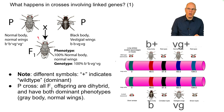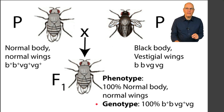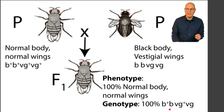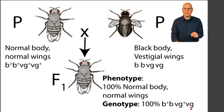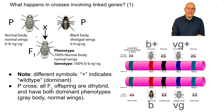In this P cross, we're crossing a normal body, normal winged fly — B+, B+, VG+, VG+ — with a black-bodied vestigial-winged fly. Those are both recessive traits. All the F1 offspring are dihybrid: B+, B, VG+, VG, and they have both dominant phenotypes — a gray body and normal wings — which is what you'd expect in a Mendelian trait for the F1s.